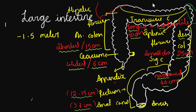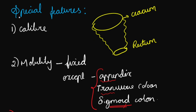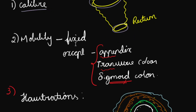Quick recap: Large intestine is 1.5 meters long. Parts include appendix, cecum (widest, 6 cm), hepatic flexure, transverse colon (longest and most mobile, 50 cm), descending colon (25 cm), rectum (12–15 cm), and anal canal. Regarding special features: calibre is wide at origin and becomes narrow at the rectum. Mobility is mostly fixed, except appendix, transverse colon, and sigmoid colon. Haustrations arise from the thin longitudinal and thick circular muscular layers.